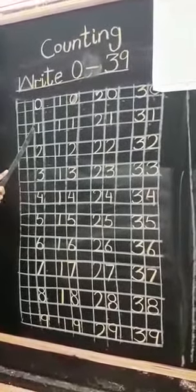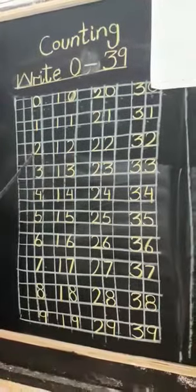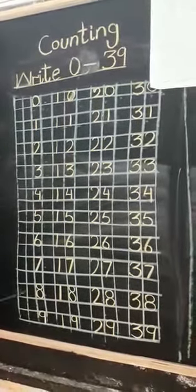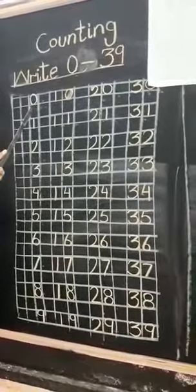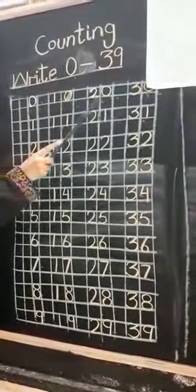After you write the 1, leave the 1 box and come to the next. And in this way, you have to write the family of 0, 10, 20 and 30.